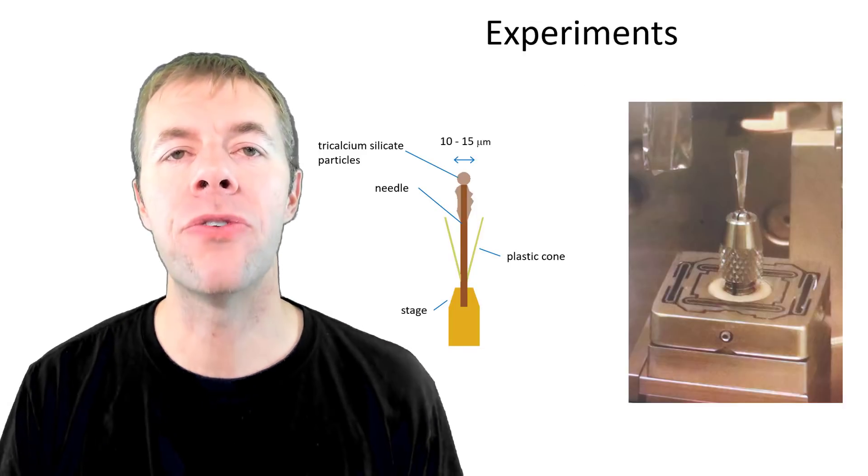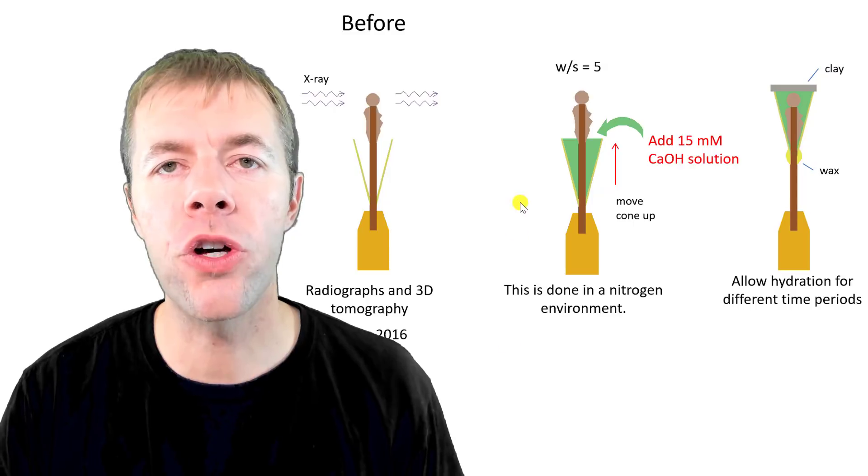So in these experiments, we're going to start out with this very small grouping of cement particles, actually C3S particles. And then we have this plastic cone. This cone can move up and down. We're going to take a 3D scan of the material before. We're actually going to fill the cone up with a known solution. We're going to move the cone up over the material and let it react and seal it with clay on top.